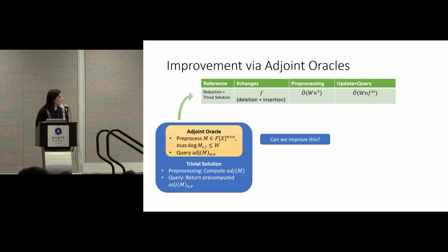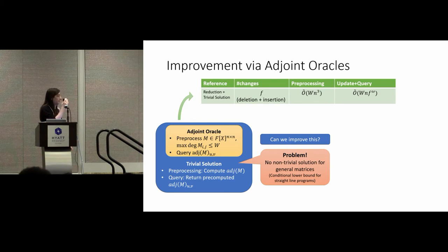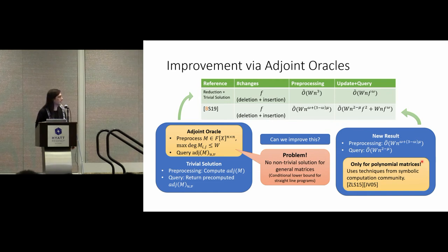Is there some better way than this trivial solution for the adjoint oracle? Unfortunately, there is a conditional lower bound showing that if you have a data structure for this problem that works on any matrix over every field, it must be the trivial solution in terms of complexity. But we don't need a data structure that works on every field — it's enough if it just works on polynomial matrices. So we managed to get a result for polynomial matrices where our preprocessing is less than n-cubed, assuming we choose an appropriate trade-off parameter mu, and our query time becomes less than n-squared as well.